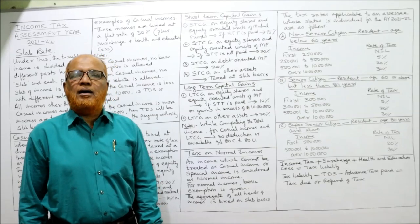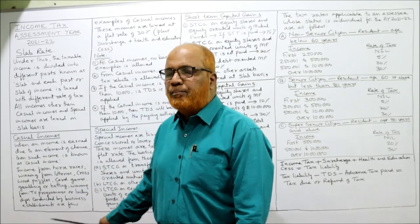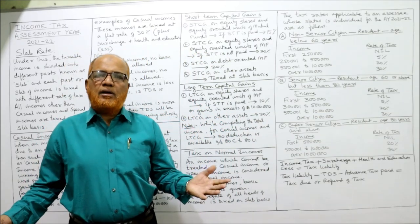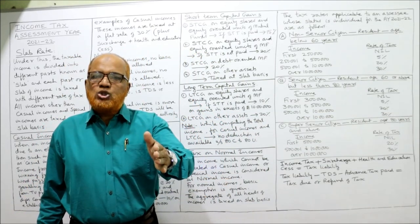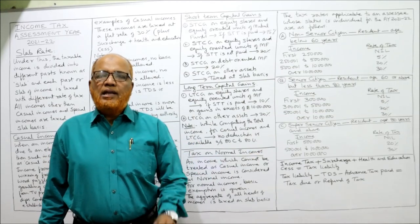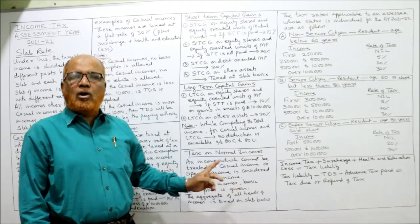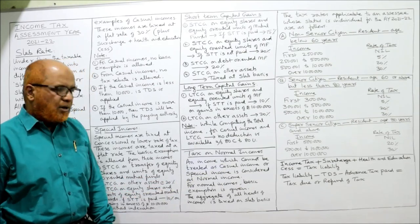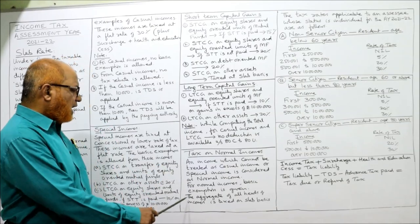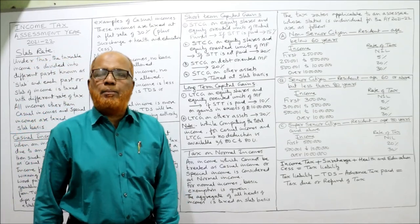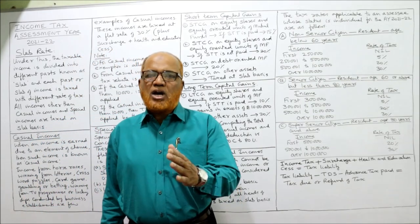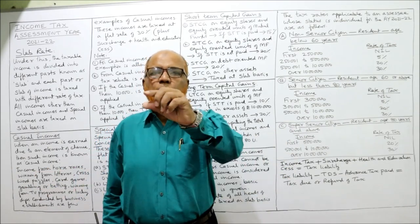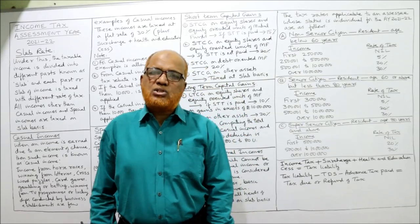Now the last point — tax on normal income. We have discussed tax on casual income and tax on special incomes; now tax on normal income. Normal income is any income which is neither casual income nor special income. Leaving those two, all other incomes are called normal income. For normal incomes, basic exemption is given and the aggregate of all heads of income is taxed on a slab basis. Income tax is not charged separately on each head; we add up all heads combined together, find out the total income, and apply normal tax rates on that.